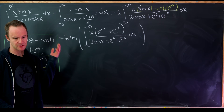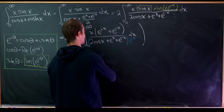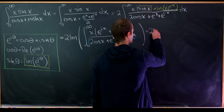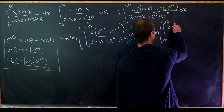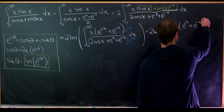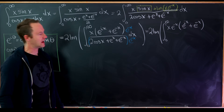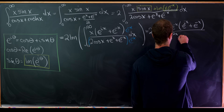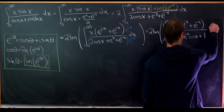Our next step is to take this numerator and denominator and multiply by e to the minus x. So we have two times the imaginary part of the integral from zero up to infinity. We have x e to the minus x times the quantity e to the i x plus e to the minus x. Distributing e to the minus x through the denominator leaves us with e to the minus 2x plus two e to the minus x times cosine of x plus one, and then dx.